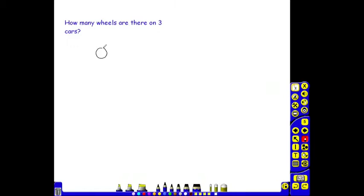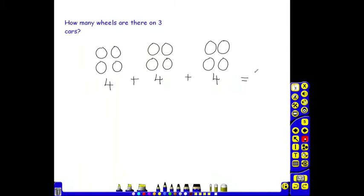So, 4 wheels for 1 car. 4 wheels for another car. And 4 wheels for the 3rd car. So, the repeated addition is 4, add 4, add 4. 3 lots of 4 make 12. They may also say 3 multiplied by 4 equals 12.